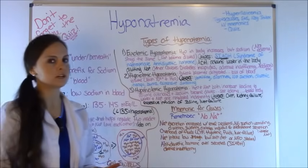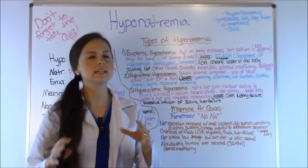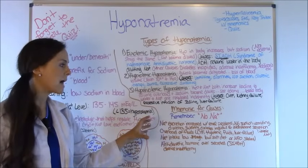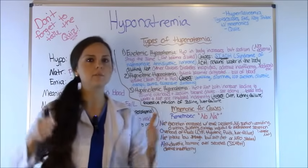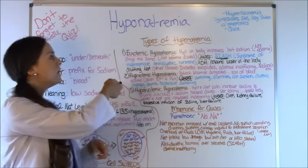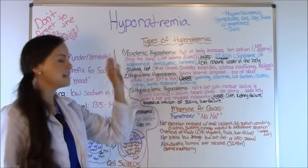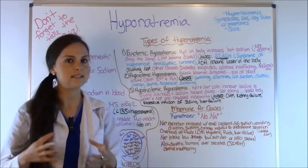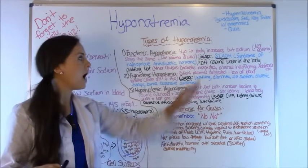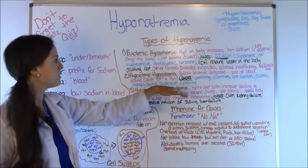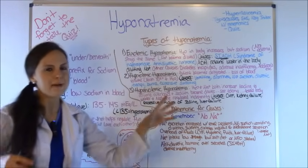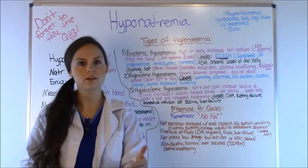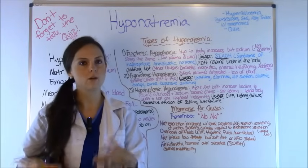Now let's talk about the different types of hyponatremia, because patients present a little differently and are caused by different things. I'll give you a mnemonic to remember them. First, euvolemic hyponatremia — this is where the water in the body increases but sodium stays the same. You're not going to see edema like you will with hypovolemic hyponatremia. Because you have that increased water volume, the sodium becomes diluted. So when you measure the sodium level, it's going to be diluted with all that water and read as low.